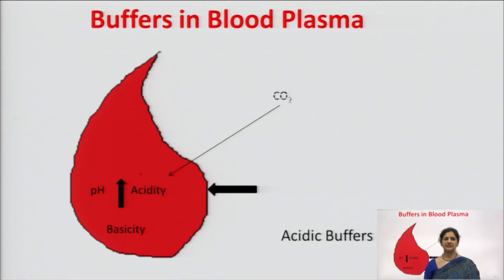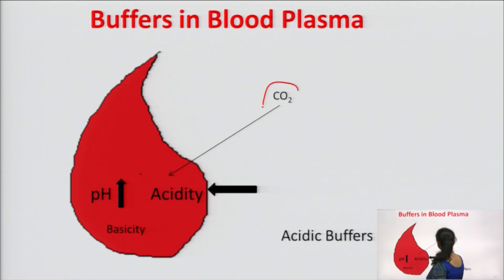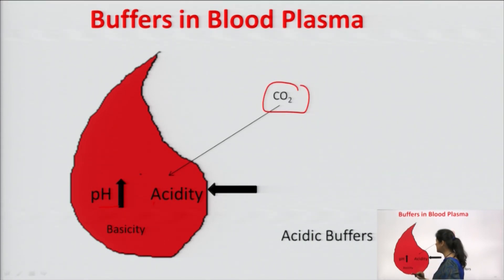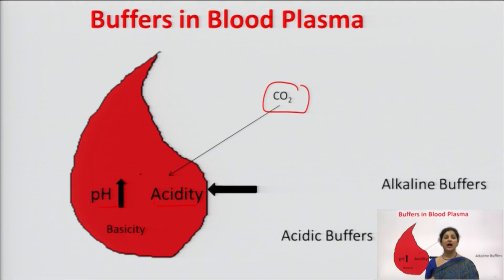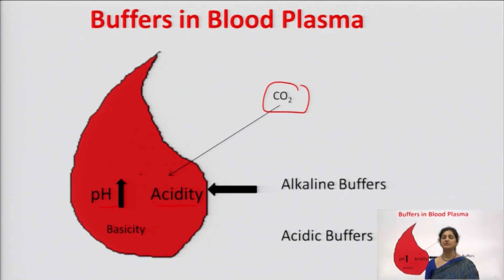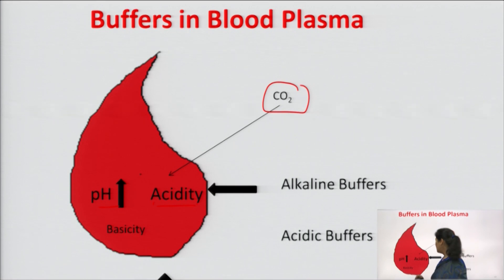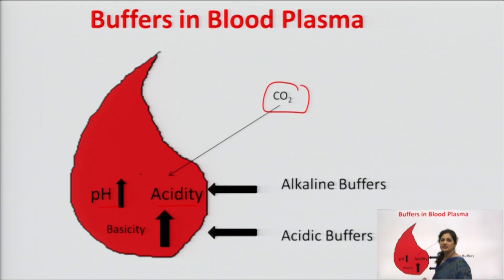When CO2 enters the blood, acidity increases, so alkaline buffers come into play. Likewise, when basicity increases, acidic buffers help maintain the pH. This pictorial view shows how CO2 plus water gives carbonic acid, which dissociates into hydronium and bicarbonate ions — the carbonic acid/bicarbonate buffer system.